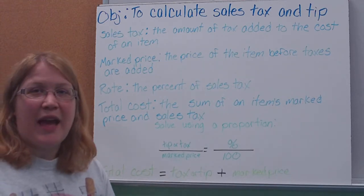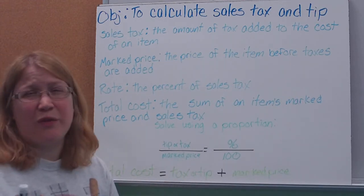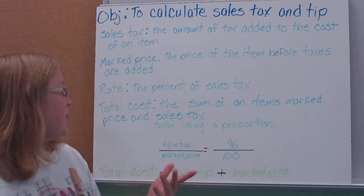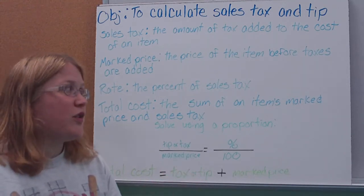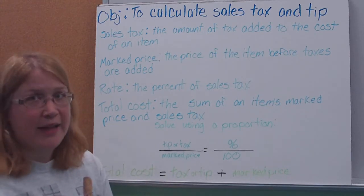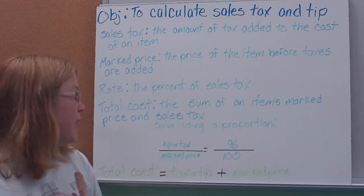Rate is the percent of the sales tax, which you may or may not know is different for each state. In New Jersey, it's 7%. And then total cost would be the sum of the item's marked price plus the tax, or if we're dealing with tip plus the tip then.